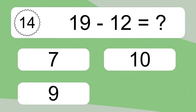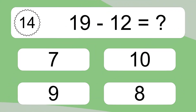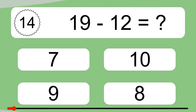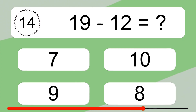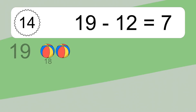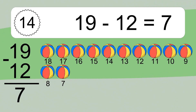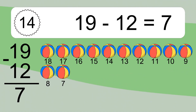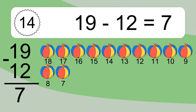19 minus 12 equals what? 19 minus 12 equals 7. Let's count it. 18, 17, 16, 15, 14, 13, 12, 11, 10, 9, 8, 7.